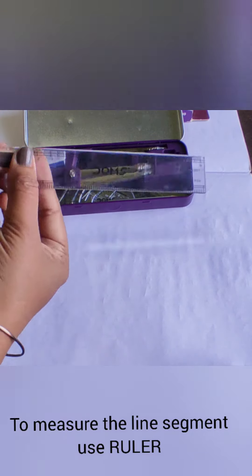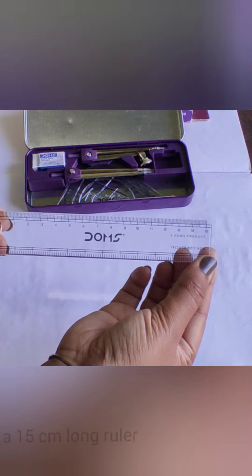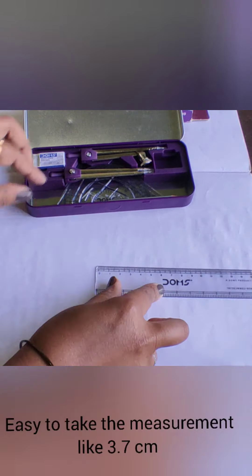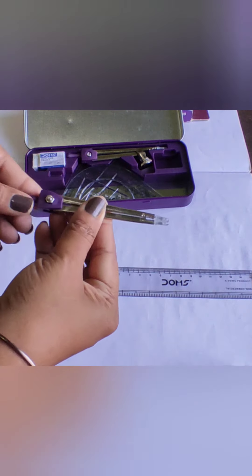To measure the line segment, we use a ruler. And here it is given the 15cm long ruler. In this ruler, small sections are also given, easy to take the measurement like 3.7cm.